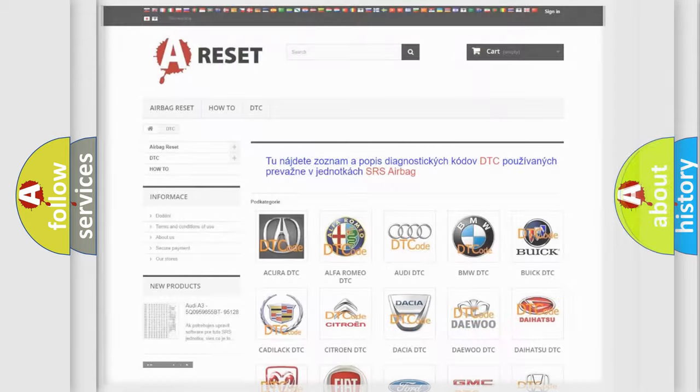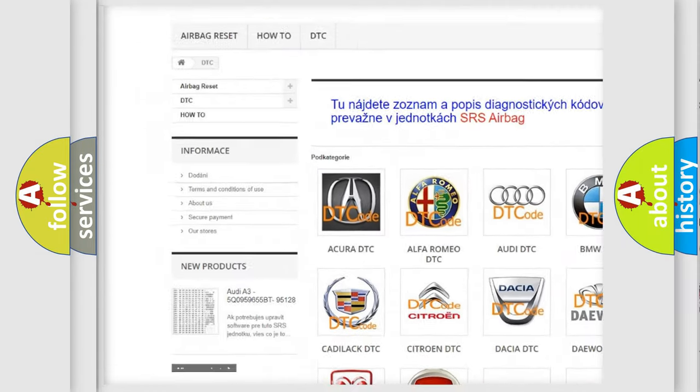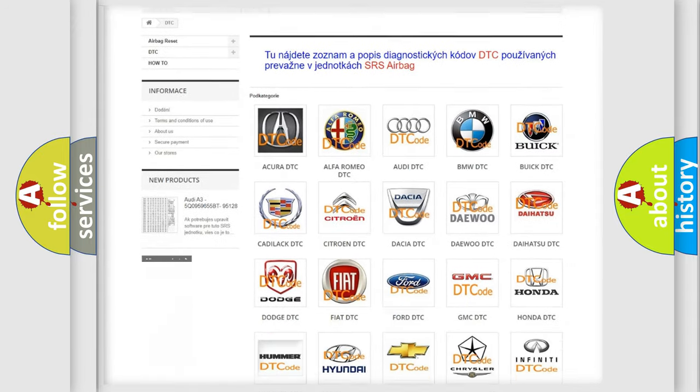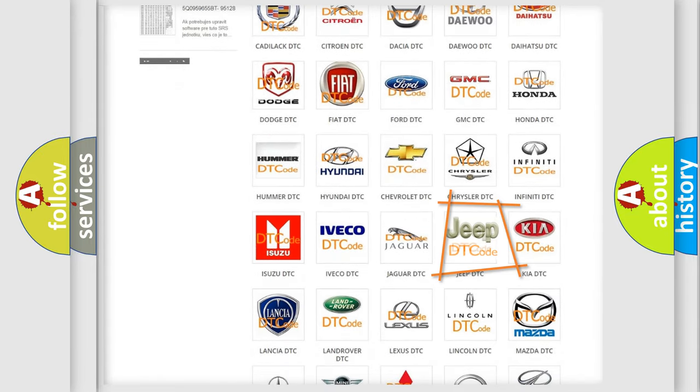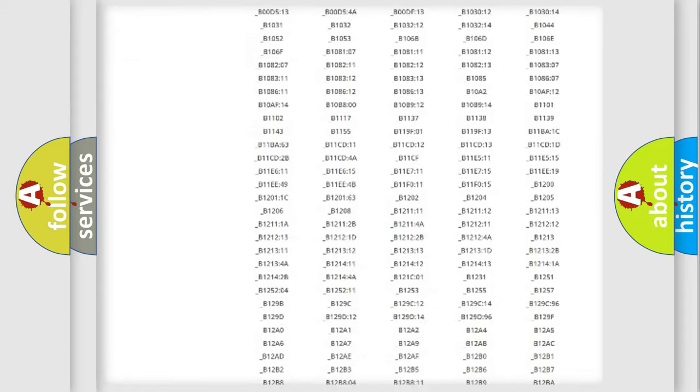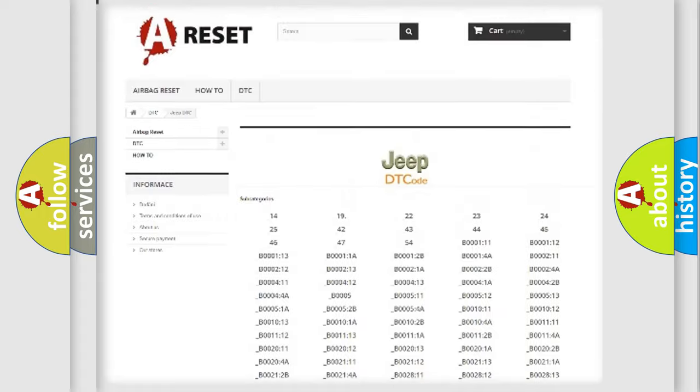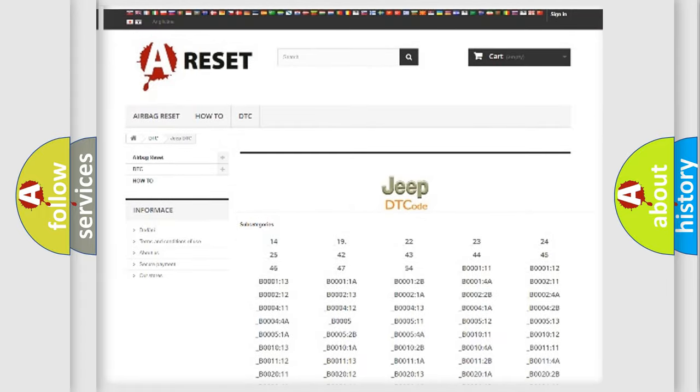Our website airbagreset.sk produces useful videos for you. You do not have to go through the OBD2 protocol anymore to know how to troubleshoot any car breakdown. You will find all the diagnostic codes that can be diagnosed in Jeep vehicles, and also many other useful things.